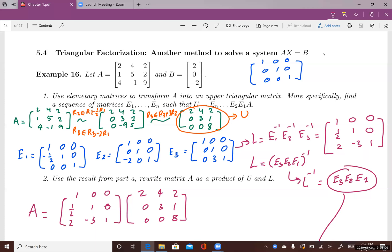This lecture introduces triangular factorizations, another method that you can use to solve a system of linear equations AX equals B, where A is a coefficient matrix of the system, X is the variable matrix or variable vector, and B is a constant vector.